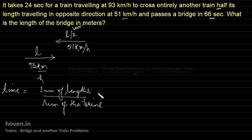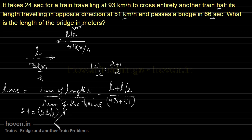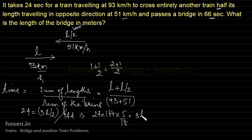The sum of lengths is L plus L by 2. The sum of speeds is 93 plus 51, which equals 144 kilometers per hour. The time has been given as 24 seconds. So we write: 24 equals 3L by 2 divided by 144 km/h. Converting 144 km/h to meters per second by multiplying by 5 by 18, we get 3L by 2.